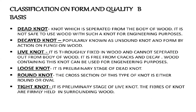Classification of knots on form and quality basis: Death knot is a knot which is separated from the body of wood; it is not safe to use wood with such a knot for engineering purposes. Decay knot is also known as an unsound knot, formed by the action of fungi on wood. Live knot is thoroughly fixed in wood and cannot be separated from the body; it is free from cracks and decay, and wood containing this knot can be used for engineering purposes. Loose knot is the preliminary stage of a death knot. Round knot has a cross section that is either round or oval. Tight knot is the preliminary stage of a live knot, and its fibers are firmly held in the surrounding wood.